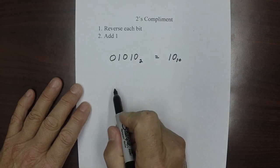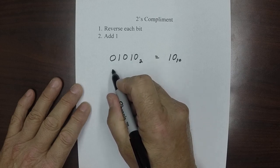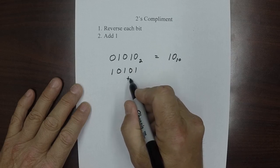So to convert this to 2's complement, we want to make it a negative number. The very first thing we do is we reverse the bits: 1, 0, 1, 0, 1, and then we add 1 to it.